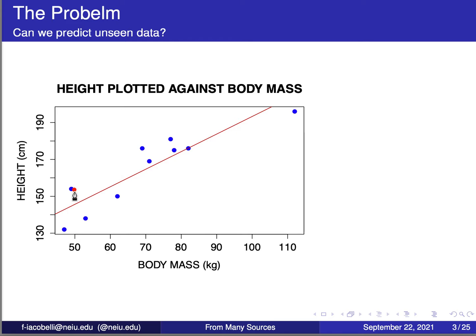From each data point to this line, there is a distance — that is the distance from the data point to the predicted point, or the prediction. With those data points and predictions, if we take the prediction minus the data point, squared, that gives a positive number proportional to this distance. If we average those squares across all data points, we get what's called the error.